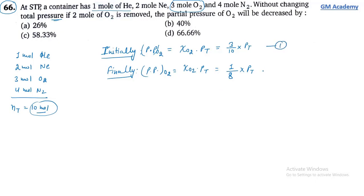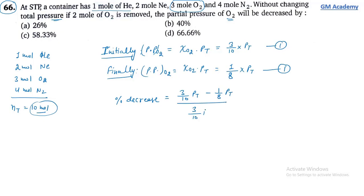Percentage decrease = (initial - final)/initial × 100 = [(3/10)P - (1/8)P] / [(3/10)P] × 100 = 58.33%. Option C is the correct answer.